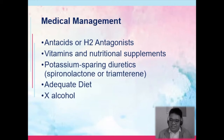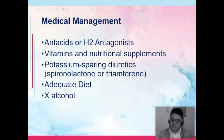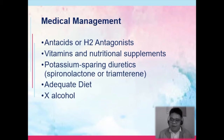Potassium-sparing diuretics are given because in this condition there is an increase of aldosterone, which leads to increased sodium but decreased potassium — so we want to spare potassium. Examples include spironolactone or triamterene. An adequate diet is recommended, and alcohol is absolutely contraindicated.